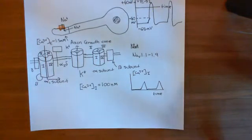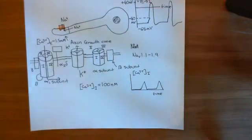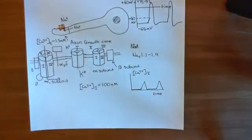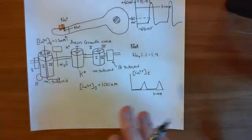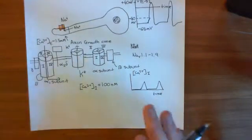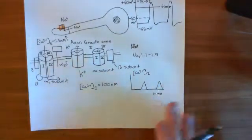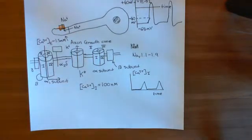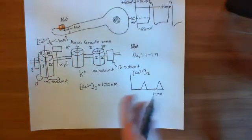You might be wondering when we're going to get to EphrinA — and we are — but this is really, really important because the actions of EphrinA are completely determined by these oscillations. EphrinA doesn't work if you get rid of these calcium oscillations. So now let's go on: what do these oscillations in calcium do?